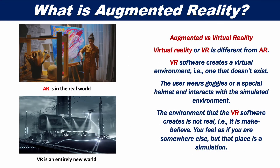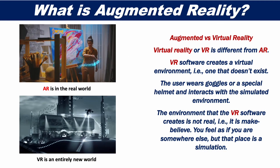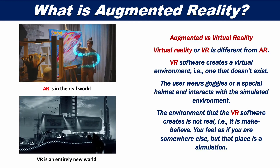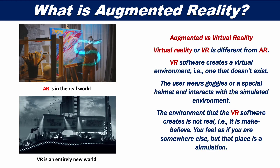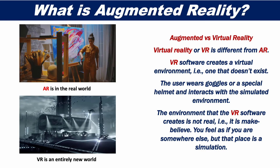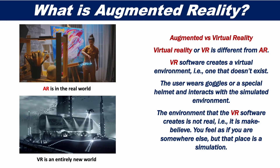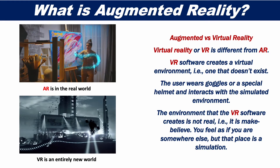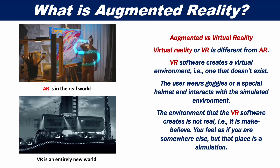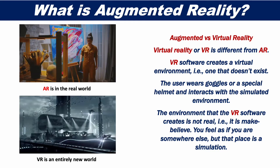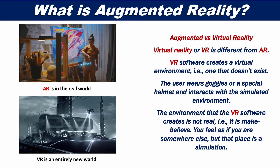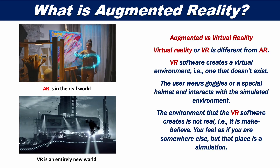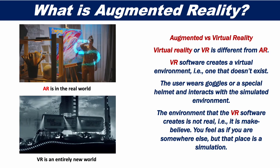So what's the difference between augmented reality and virtual reality? Virtual reality is quite different from AR. VR software creates a virtual environment — that is, not a real environment. The users wear a headset and interact with the simulated environment. The environment that the VR software creates is not real; it is make-believe. You feel as if you are somewhere else, but that place is a simulation.